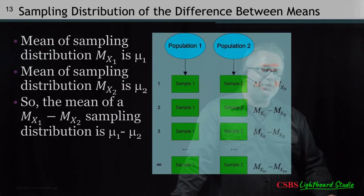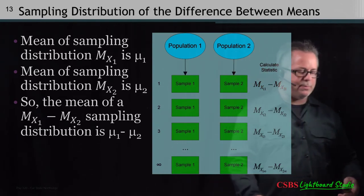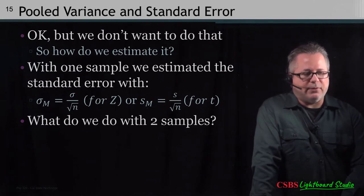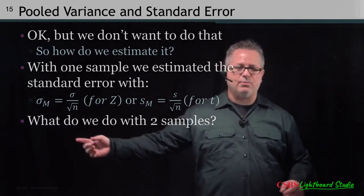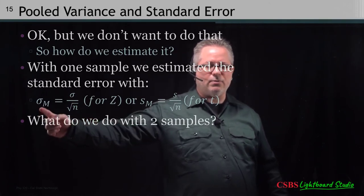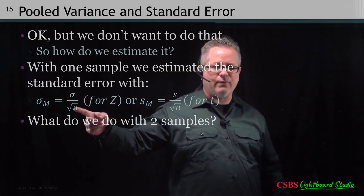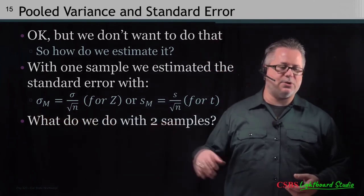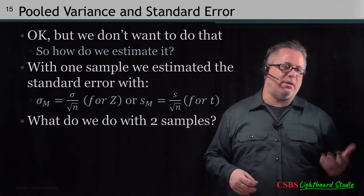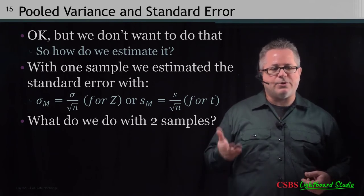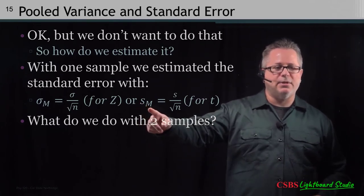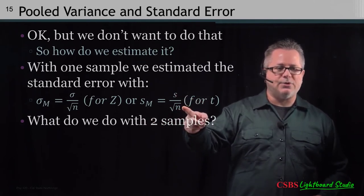If we don't want to go through the process of pulling thousands of samples just to compare two, we can estimate the standard error directly, just like with the one-sample test. In a Z test, sigma was given so we could compute the standard error as sigma over the square root of N. When we switched to a t-test, we replaced sigma with S, and the standard error became S divided by the square root of N. The problem now is that we have two samples and can't just plug in both standard deviations — we need to figure a way around that.